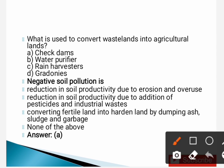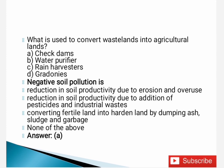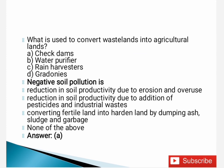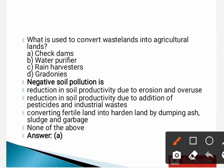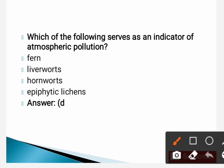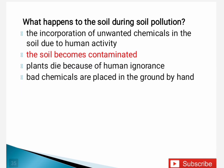Now I will discuss some MCQs. First: what is used to convert wasteland into agricultural lands? The correct answer is Gradients — Option D is the right answer. Next: negative soil pollution — the correct answer is reduction in soil productivity due to erosion and overuse. Next: which among the following serves as an indicator of atmospheric pollution? The correct answer is epiphytic lichens — Option D.